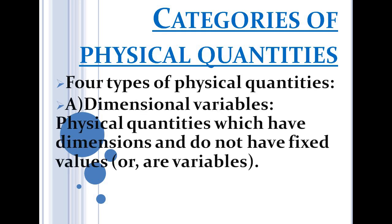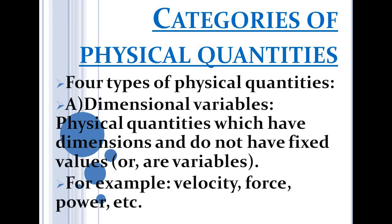The first type is dimensional variables. These are physical quantities which have dimensions but are variables — they do not have fixed values but do have dimensions. Such physical quantities are called dimensional variables. For example, force, velocity, power, and work done are dimensional variables.